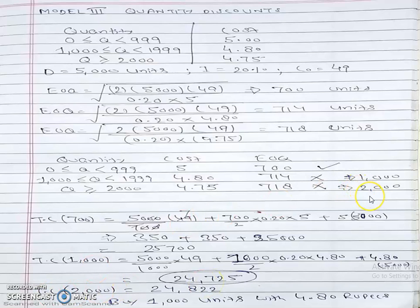Now calculate the value for 2,000. The process is the same; we replace 1,000 with 2,000 and per unit cost with 4.75. This value is 24,822. So total annual inventory cost for 700 is 25,700; for 1,000 is 24,725; for 2,000 is 24,822.